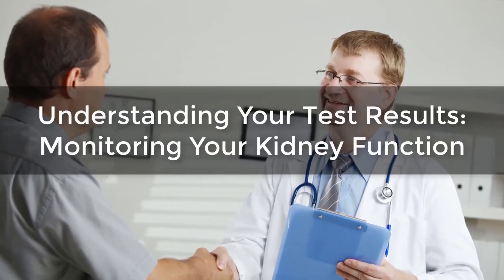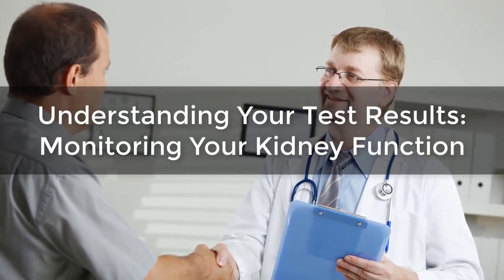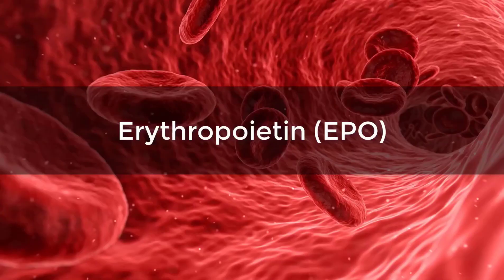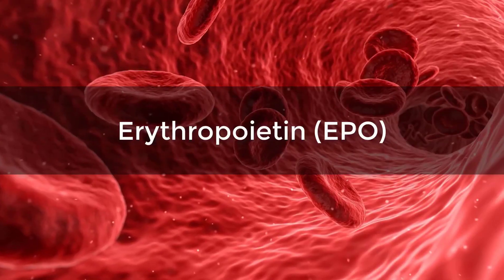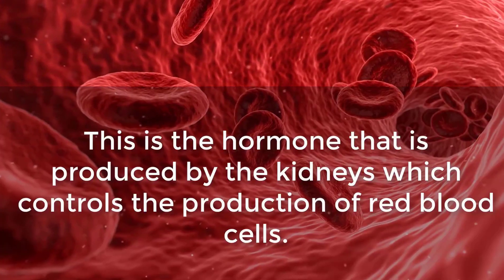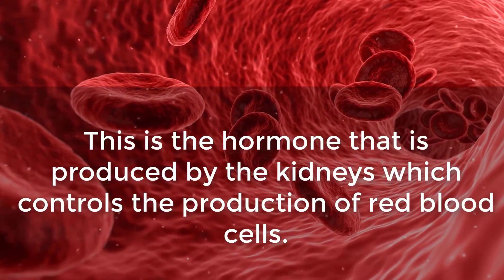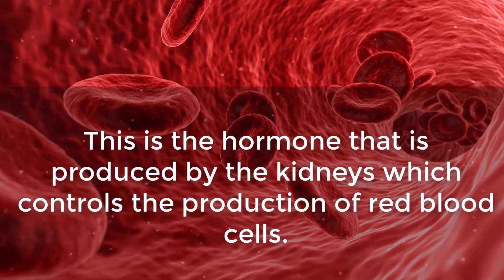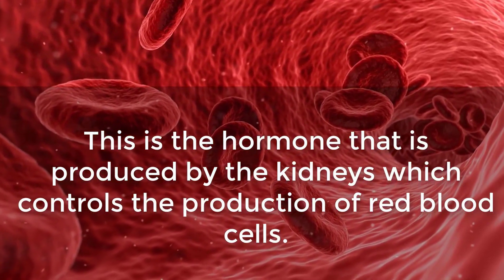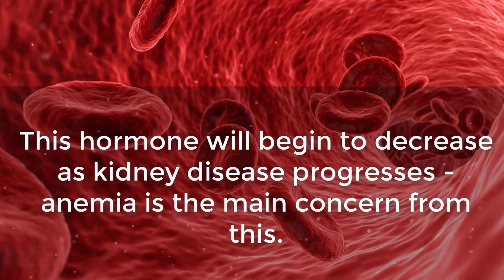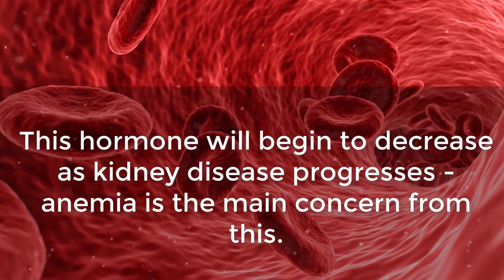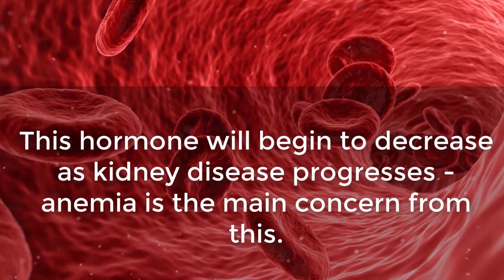Understanding your test results and monitoring your kidney function. Erythropoietin, or EPO, is the hormone that is produced by the kidneys which controls the production of red blood cells. This hormone will begin to decrease as kidney disease progresses.